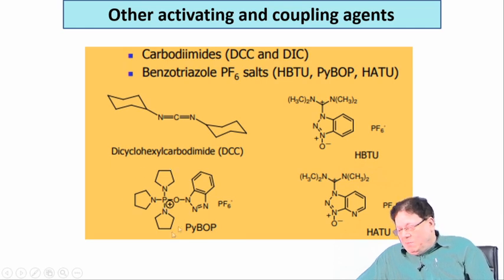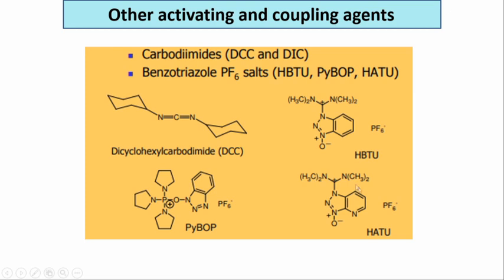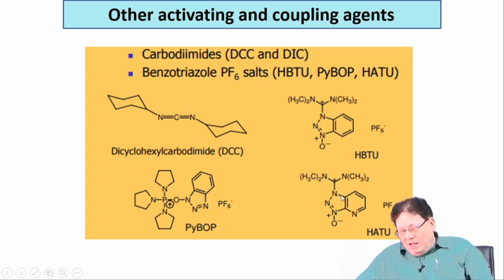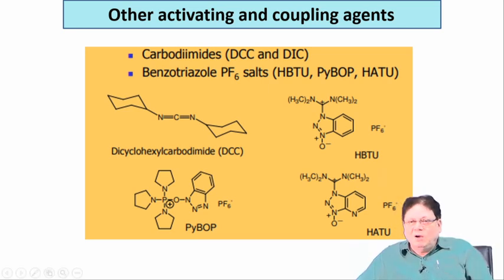One reagent is called PIBOP because it has three pyrrolidine rings and a phosphorus - these are phosphorus-based coupling agents. There are also uronium salt-based coupling agents: HBTU and HATU. Sometimes these are much more efficient than DCC, where coupling fails with DCC, partly because DCC is quite sterically bulky. In those cases you have to use HATU, HBTU, or PIBOP. There are many factors to consider when choosing a coupling agent - it is not necessarily always between amino acids; sometimes you have to couple an aromatic amine with an acid, and then you might use HBTU or HATU.